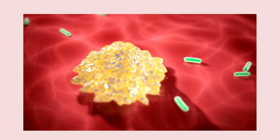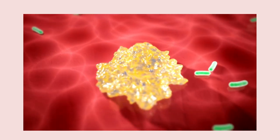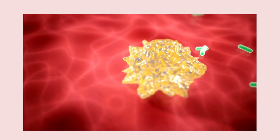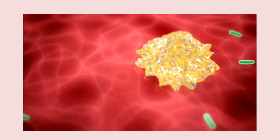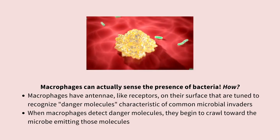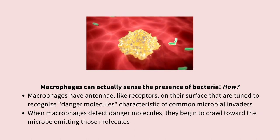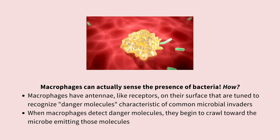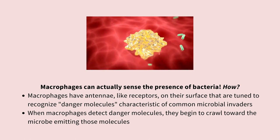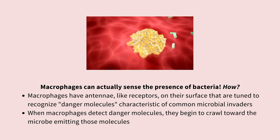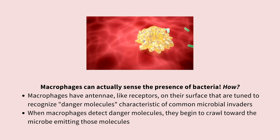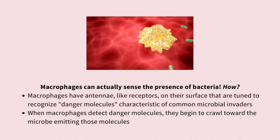If you're a bacterium, the last thing you want to see is a macrophage after you've gotten into the body on that splinter. Here you can see what a macrophage looks like devouring a bacterium. You'll notice that this macrophage isn't just waiting around until it bumps into the bacterium — this macrophage is actually sensing the presence of that bacterium and reaching out a little foot to grab it. But how does the macrophage know that a bacterium is out there?